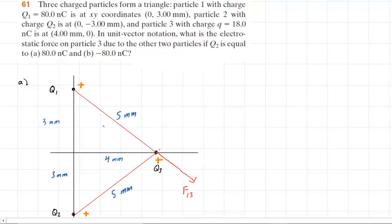Now we look at the force that Q2 is exerting on Q3. In part A, Q2 is positively charged, so it too will exert a repulsive force on Q3 in this direction. We can call that force F23, symbolizing the force that charge 2 exerts on charge 3. That completes drawing in those two forces acting on Q3.